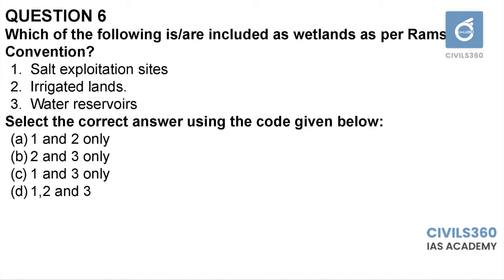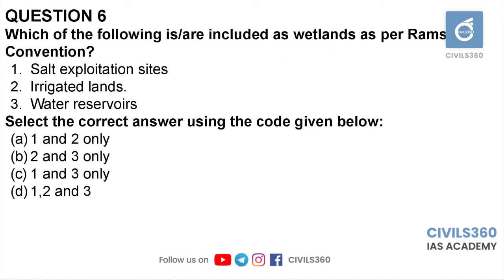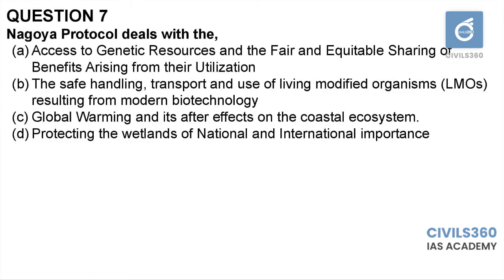Question number six: which of the following are included as wetlands as per the Ramsar Convention? One: salt exploitation sites, two: irrigated lands, three: water reservoirs. According to the Ramsar Convention, wetlands include many types of land that have the ability to contain large amounts of water permanently or semi-permanently. All the given options have the ability to contain water for varying periods. Therefore the answer is option D: one, two, and three.